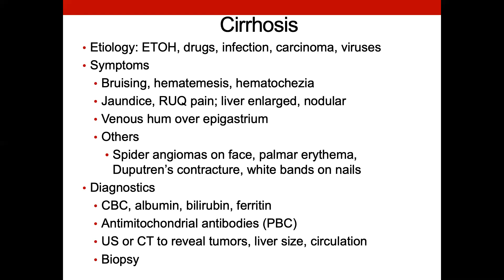I'll send patients out for an ultrasound of the liver if I think there's a process going on — it can give you a good gauge on fatty liver disease, nodularity, and what's happening. Some other things you might pick up on, especially in patients with alcohol problems, are spider angiomas on the face — a key sign to look into their alcohol history. Also a Dupuytren's contracture, a common contracture seen in folks with cirrhosis, looks kind of like trigger finger where the finger pulls up due to a nodule contracting the fascia over the tendon.